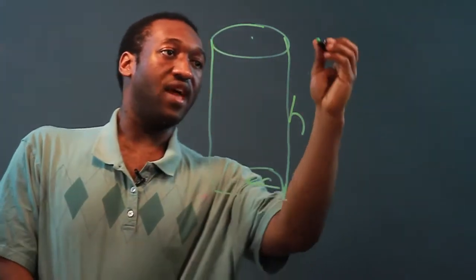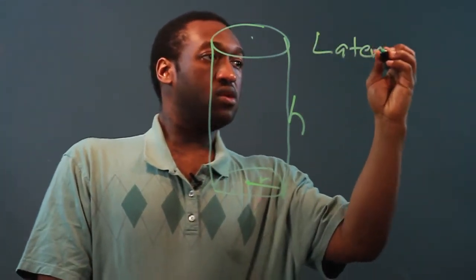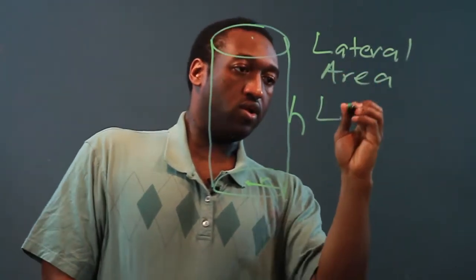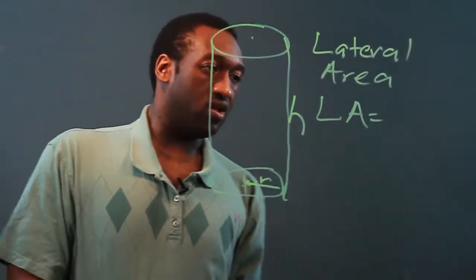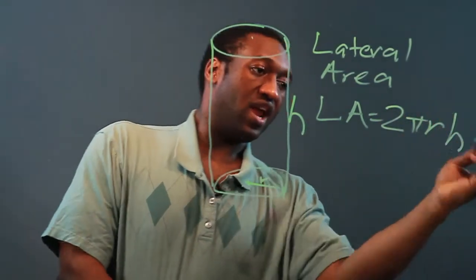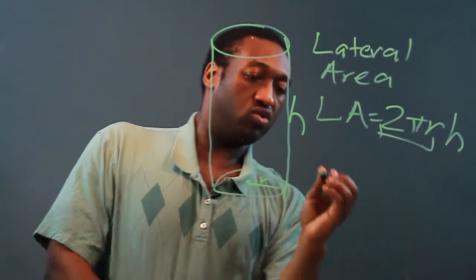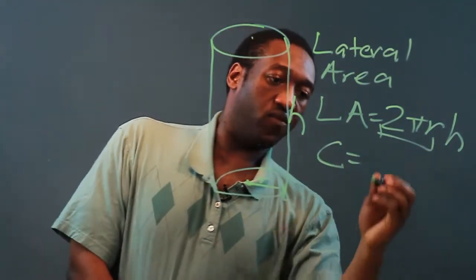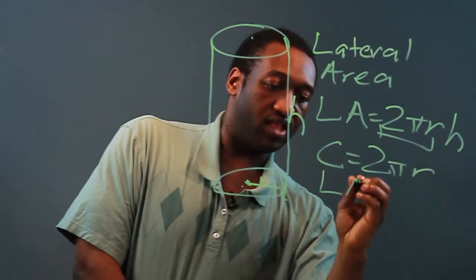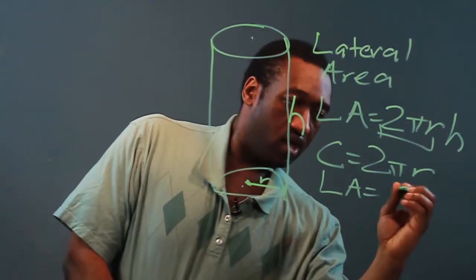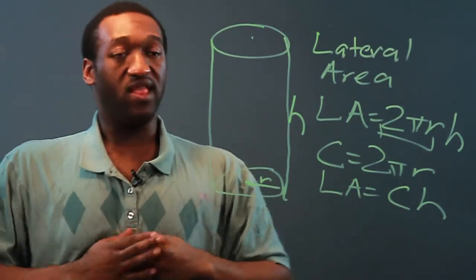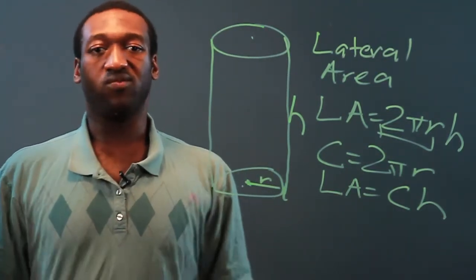To find the lateral area of a cylinder, the lateral area is 2 pi r h. Now you may notice that 2 pi r is the formula for circumference of a circle. So I can also say that the lateral area of a cylinder is circumference times height. And that's how we find the lateral area of a cylinder. Thanks for watching.